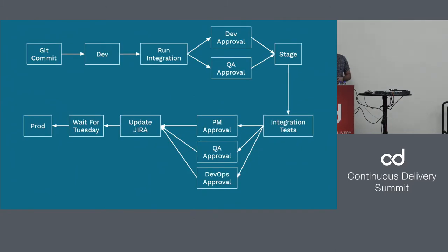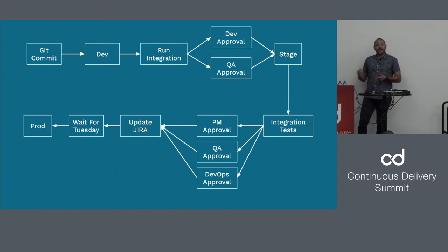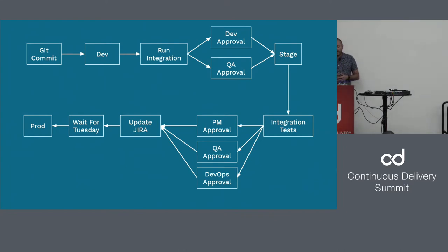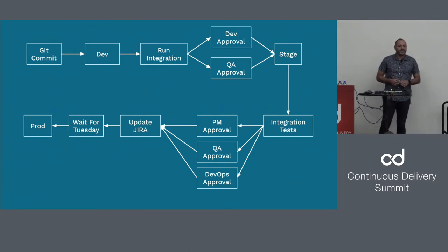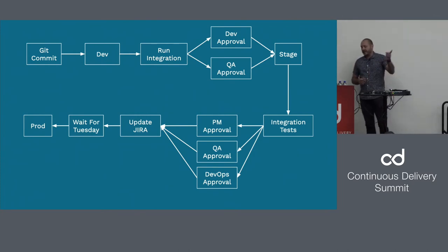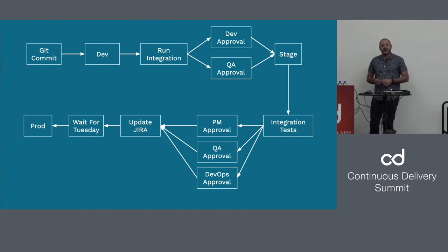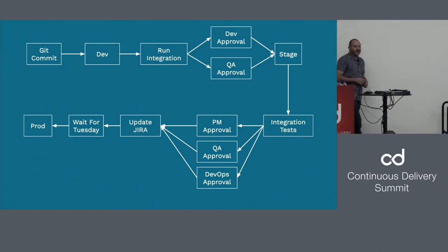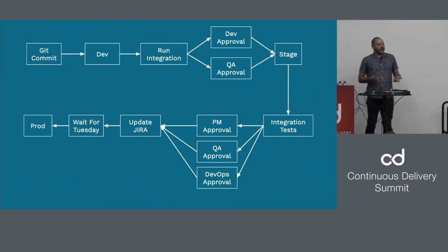But it didn't stop there. We actually have development environments and run integration in the development environment. As we go to stage, we run the integration tests again. It turns out there's also PM approval — and the way they were managing that, plus QA and DevOps approval, was through spreadsheets, JIRA, and a bunch of meetings. That's software delivery by spreadsheets, and I think we can do better than that.